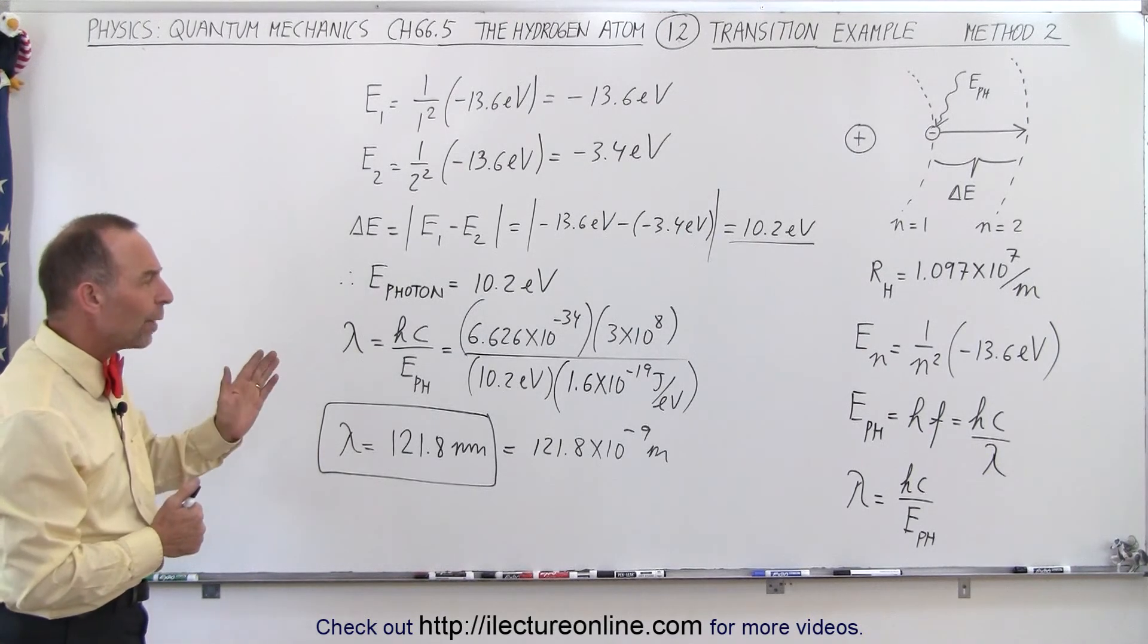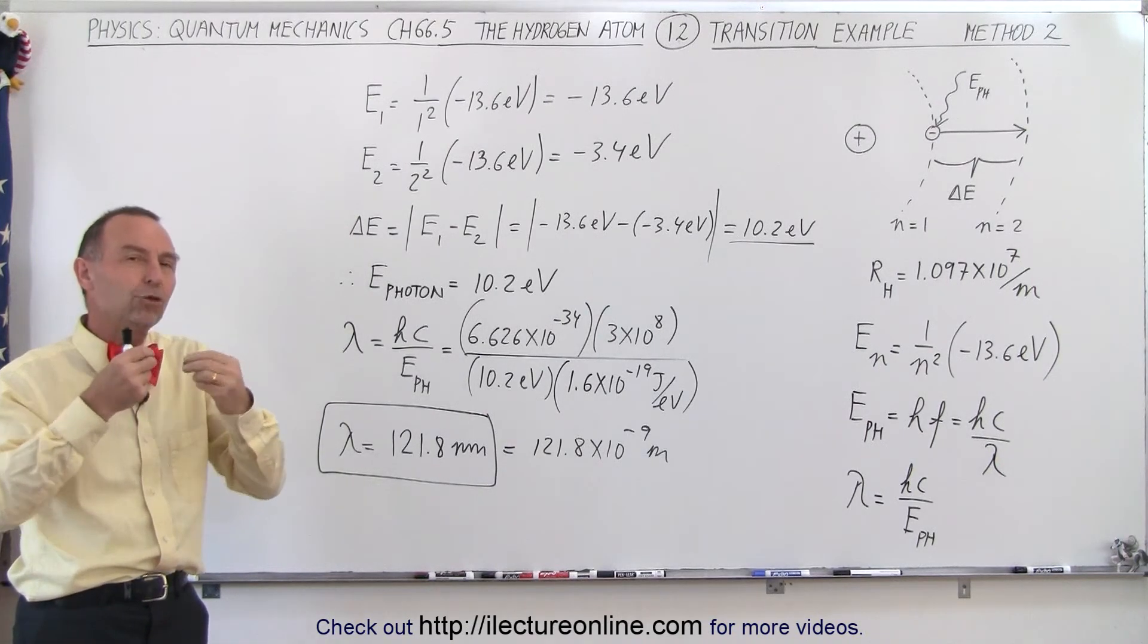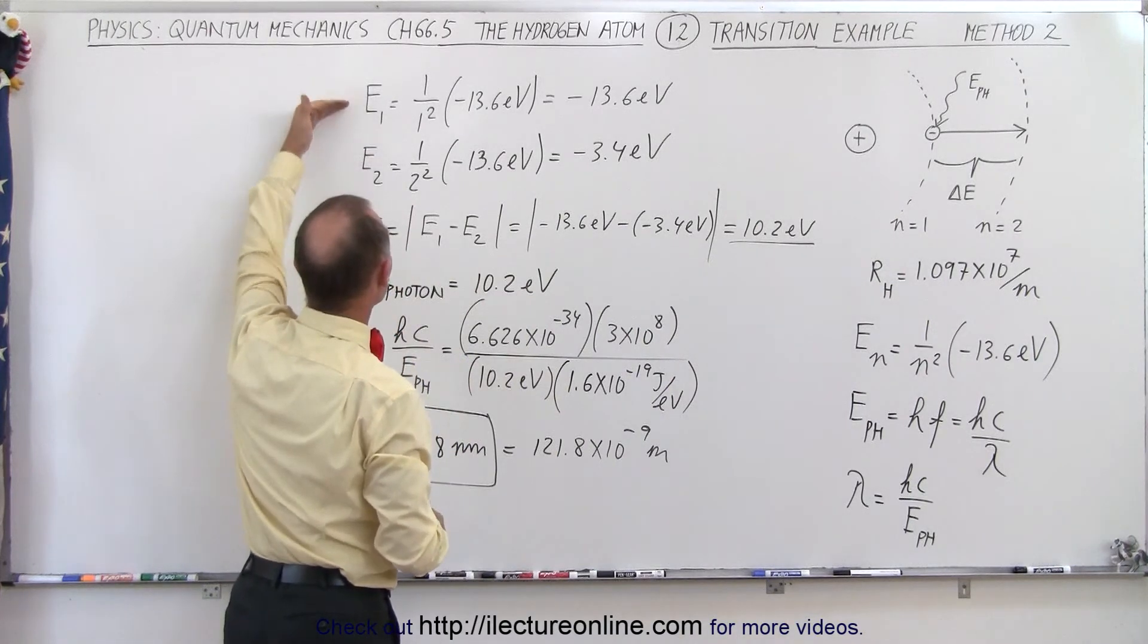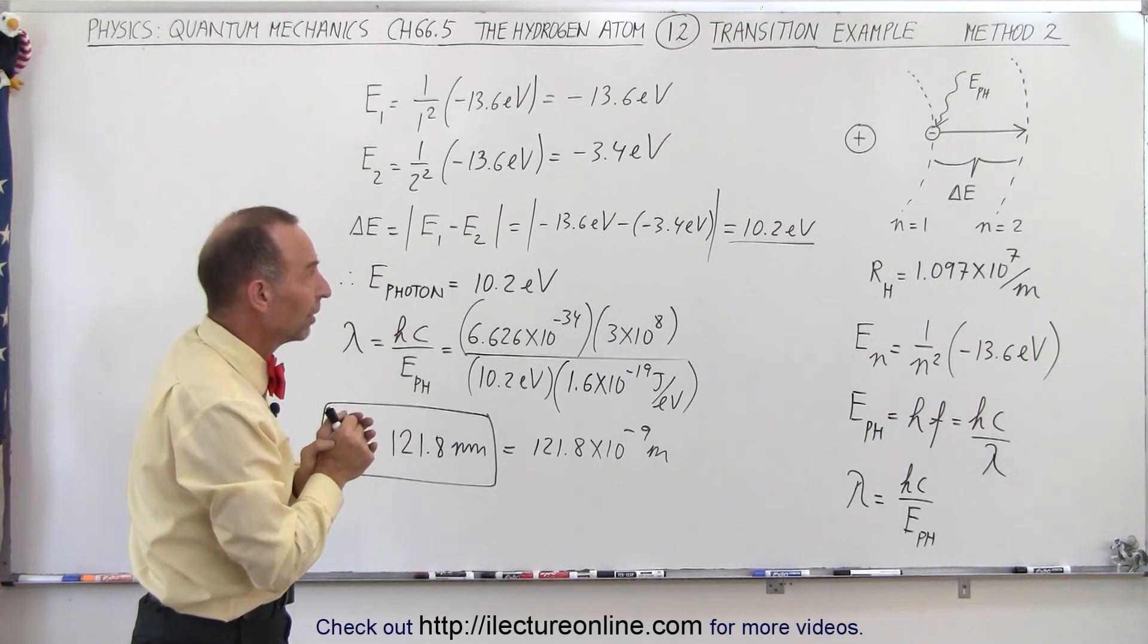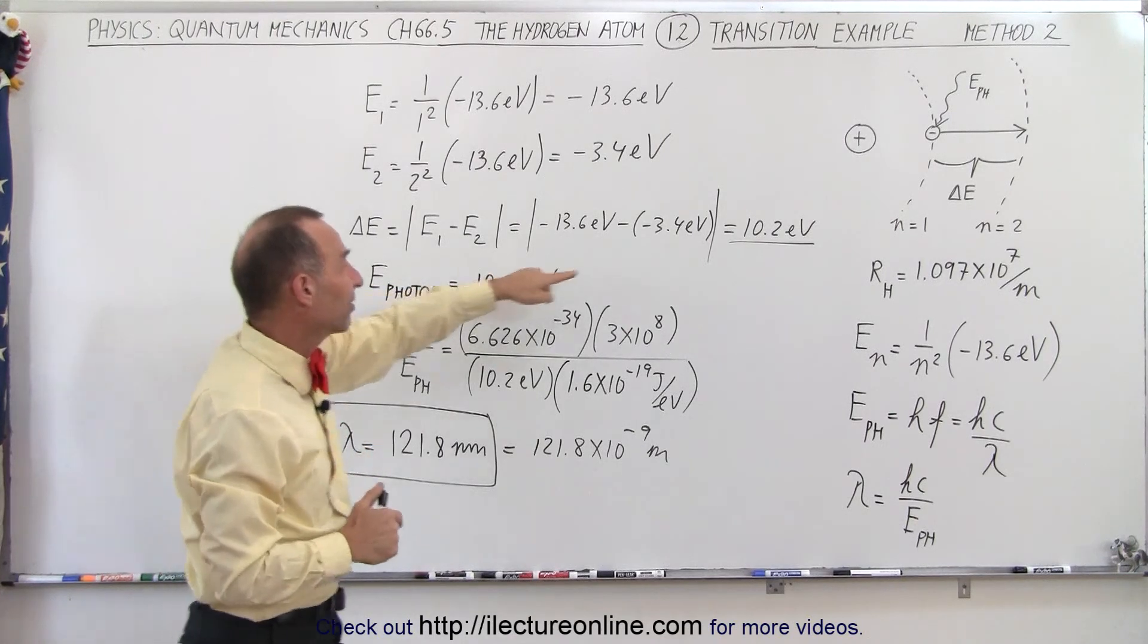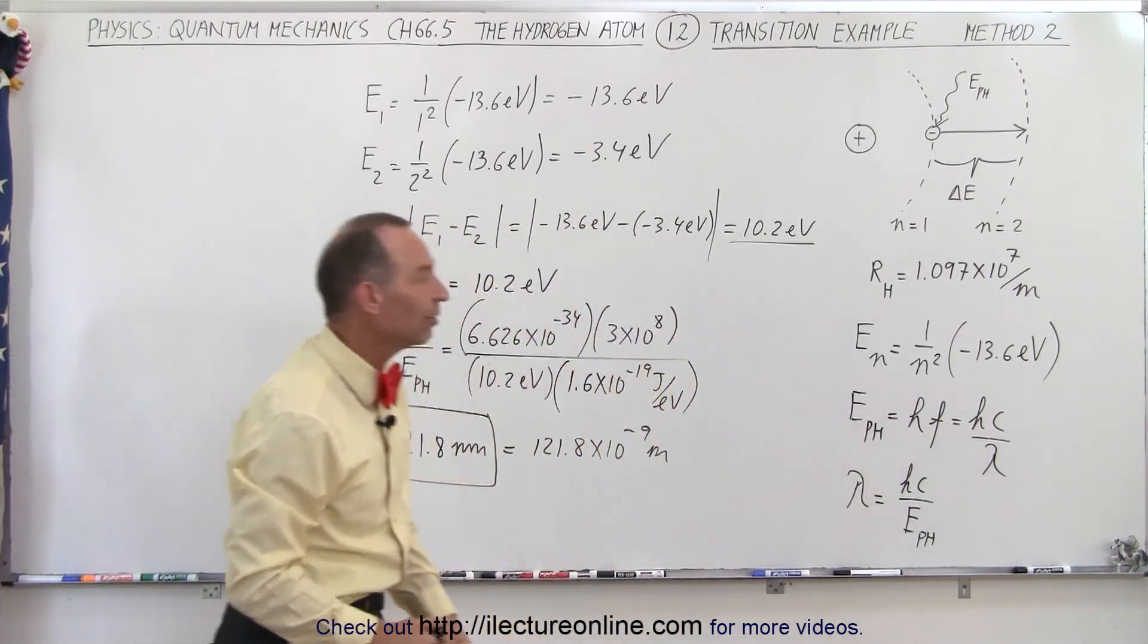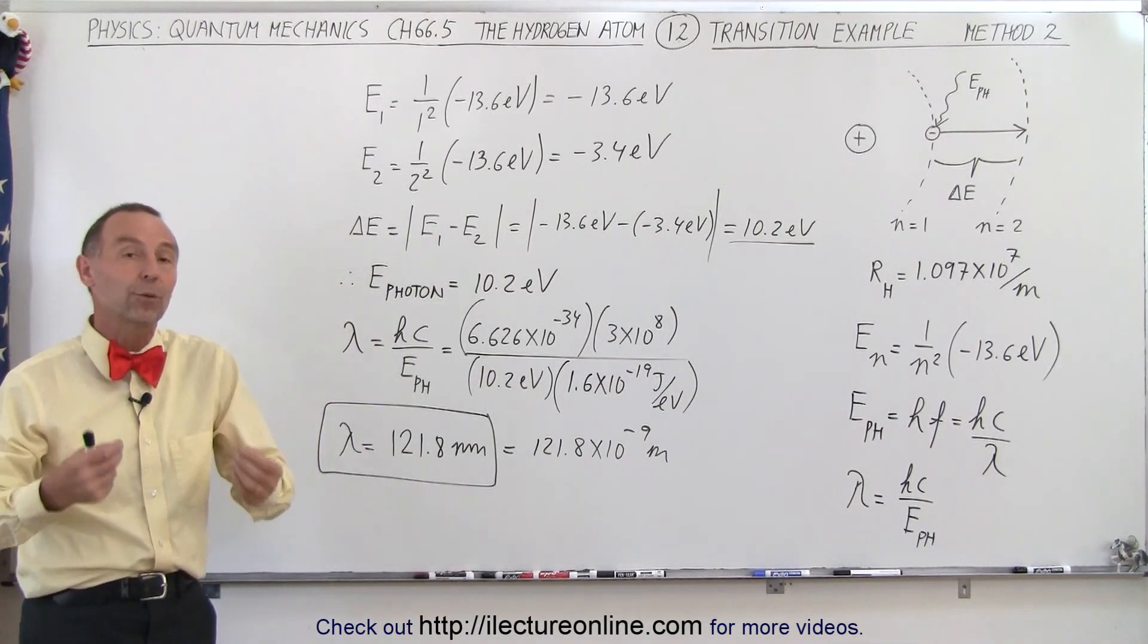Now, the reason why I personally like this method a little bit better is because it gives you a better intuitive feeling of what's going on. Here you can see that there's going to be an energy difference between the two levels, which can be calculated by finding the energy of each of the levels and then subtracting one from the other to find the difference of the energy between two orbits. And then we calculate the energy of the photon needing to be the exact same as the energy difference. And then from that, we find the wavelength of the photon using the equivalent equation of the energy of the photon being h times the frequency or hc over lambda. So it gives you a little bit better of an intuitive feeling of how that equation actually works.